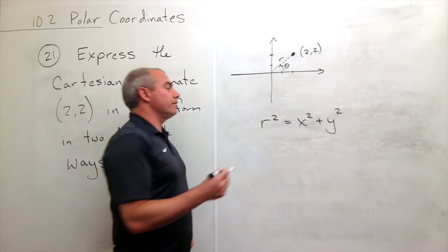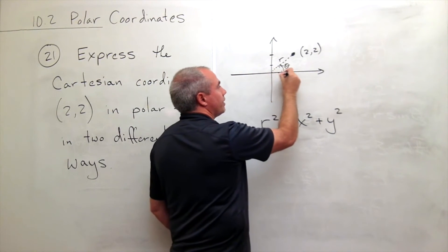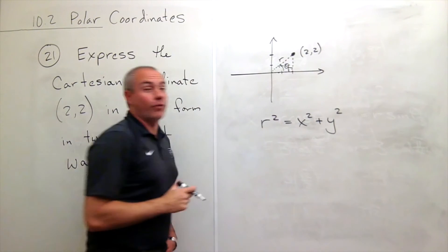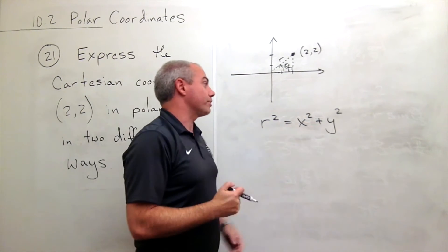All right, and you can see this is just the Pythagorean equation where this is my x value, this is my y value. I have a right triangle. I want to know the hypotenuse, and so I just get that r² equals x² plus y².